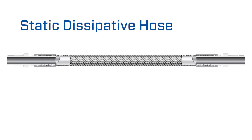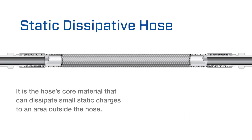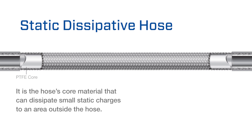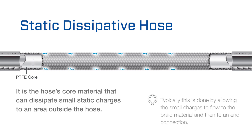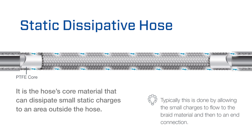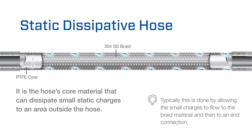In a static dissipative hose, it is the hose's core material that can dissipate small static charges to an area outside the hose. Typically, this is done by allowing the small charges to flow to the braid material and then to an end connection.